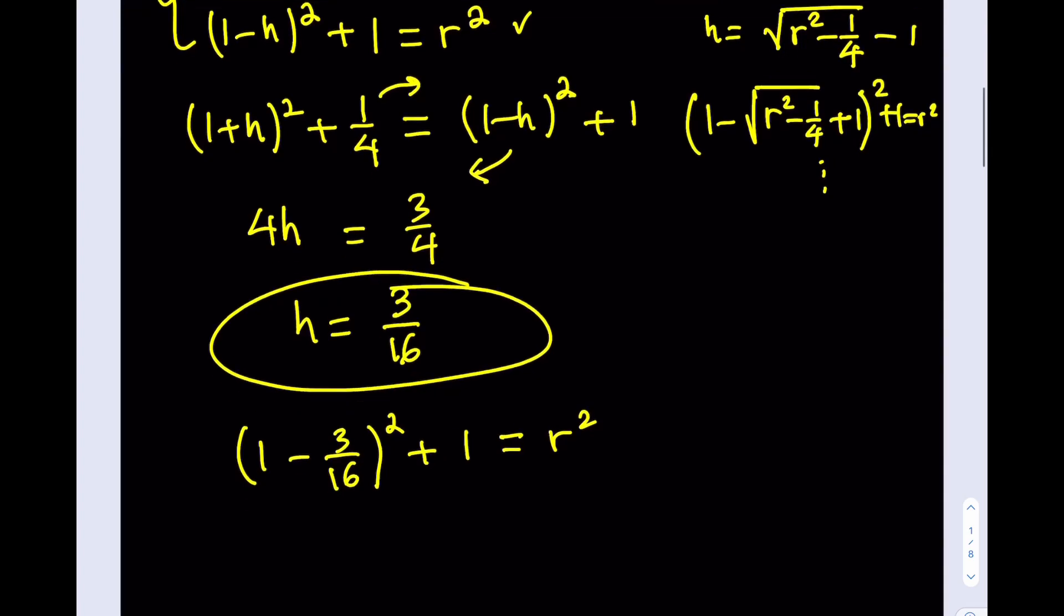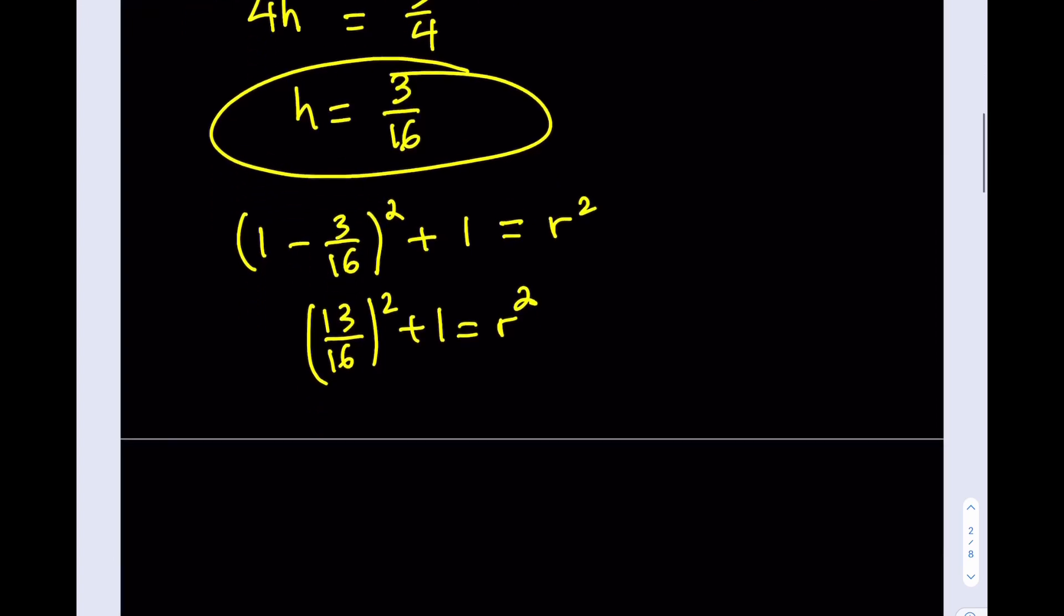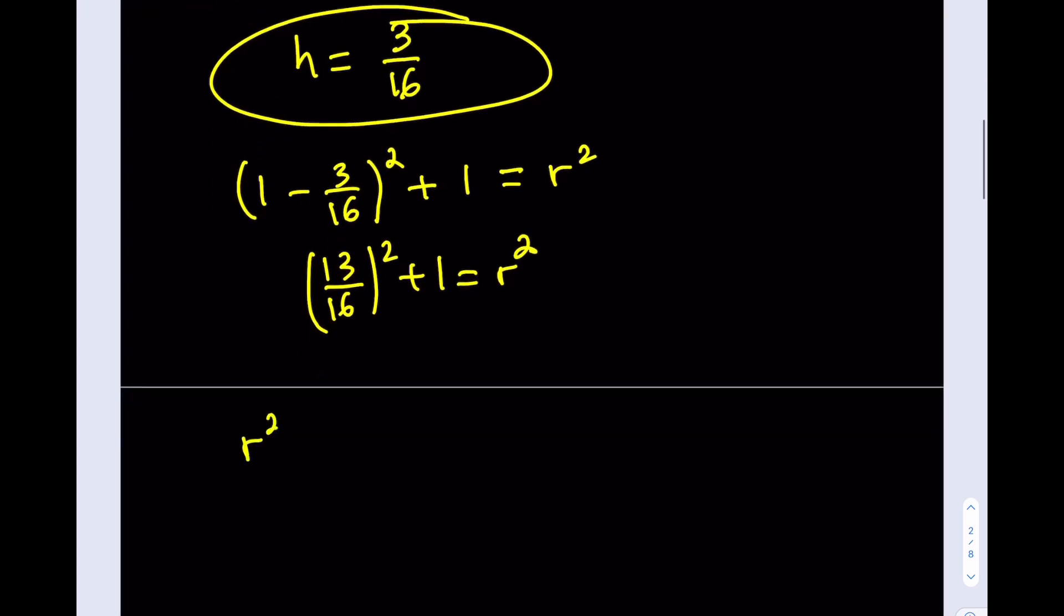Now, 1 minus 3 sixteenths is going to be 13 over 16. If you square that and add 1, you should get r². So let's go ahead and simplify the left-hand side. So we'll get r² is equal to 169 over 256 plus 1, and that should be simplified as if you add 256 and 169, you should be getting 425 over 256.